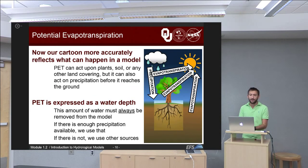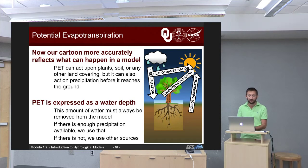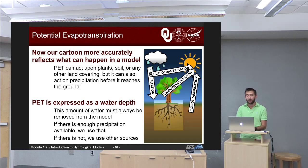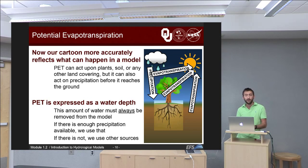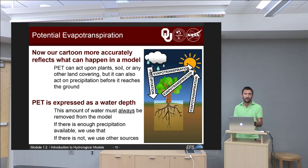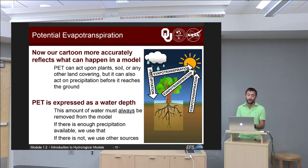Now that we know more about evapotranspiration, our cartoon more accurately reflects what can happen in a model. We still have the downward-pointing arrow of precipitation, which is water being transferred from the atmosphere into the land. But now evapotranspiration acts on the precipitation itself, on trees and plants, and also on the ground. We express PET as a water depth — in millimeters or centimeters — and this amount of water is always going to be removed from the model. If the precipitation rate is higher than the evapotranspiration rate, we just take all that ET out of the precipitation. If not, we have to look for other sources of water.